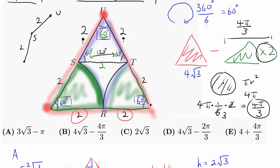So we're done. What's the answer? The answer is going to be four times square root of three minus four pi over three. And the answer is B.